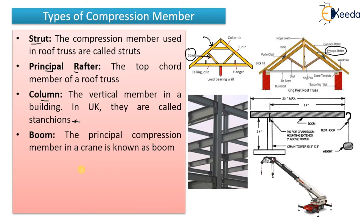Then the last type is boom. The principal compression member in a crane is called a boom. As you can see in the photo, this member here is the boom. It is the principal compression member. A crane is used to move heavy weights and transfer heavy goods, and the boom is that main compression member in a crane.